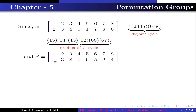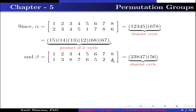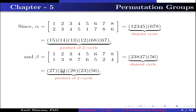Beta is the permutation in which 1 has image 1, 2 has image 3, 3 has image 8, 4 has image 7, 5 has image 6, 6 has image 5, 7 has image 2 and 8 has image 4, written as disjoint cycles (2 3 8 4 7)(5 6). Why? Since 1→1 is identity, skip it. Then 2→3→8→4→7→2, completing cycle (2 3 8 4 7). And 5→6→5, giving cycle (5 6). As a product of 2-cycles: (2 3 8 4 7) = (2 7)(2 4)(2 8)(2 3) and (5 6).